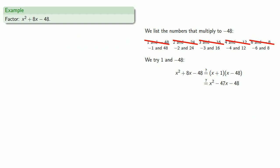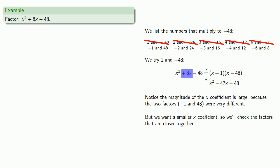We can also check on the magnitude. Notice the magnitude of the x coefficient is large, negative 47, because the two factors, minus 1 and 48, were very different. But we want a smaller x coefficient, so we'll check the factors that are closer together.